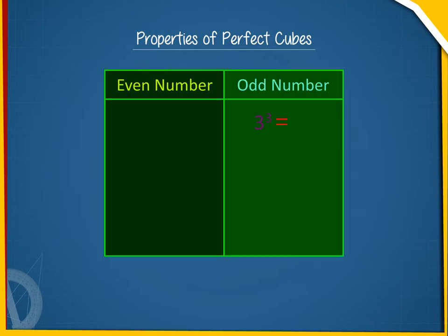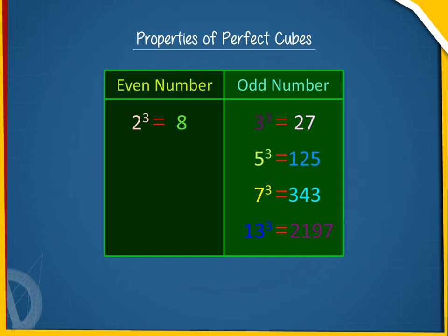For example, 3³ = 27, 5³ = 125, 7³ = 343, 13³ = 2197. And for even numbers: 2³ = 8, 4³ = 64, 8³ = 512, 16³ = 4096.